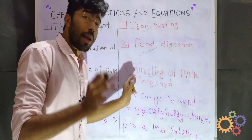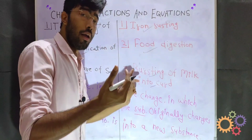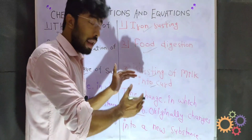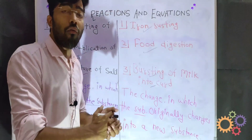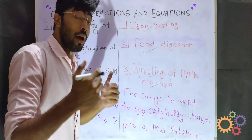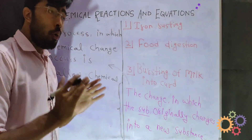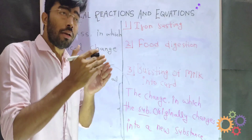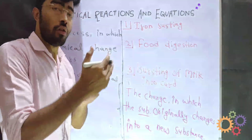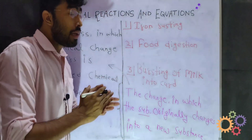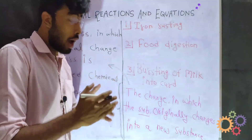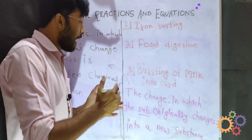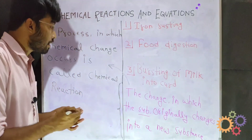In chemical changes, a new substance is formed. The change in which the substance originally changes into a new substance, and the first substance cannot be found again — that is called a chemical change. So: first, physical changes — only physical properties change, no new substance; second, chemical changes — a new substance is created.